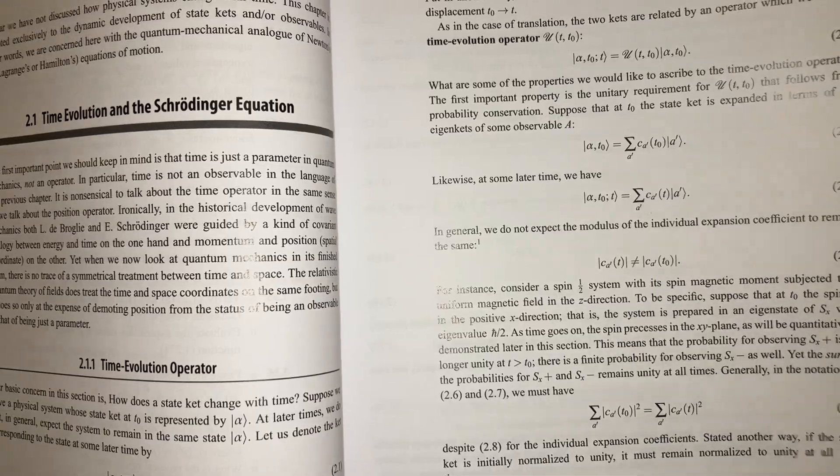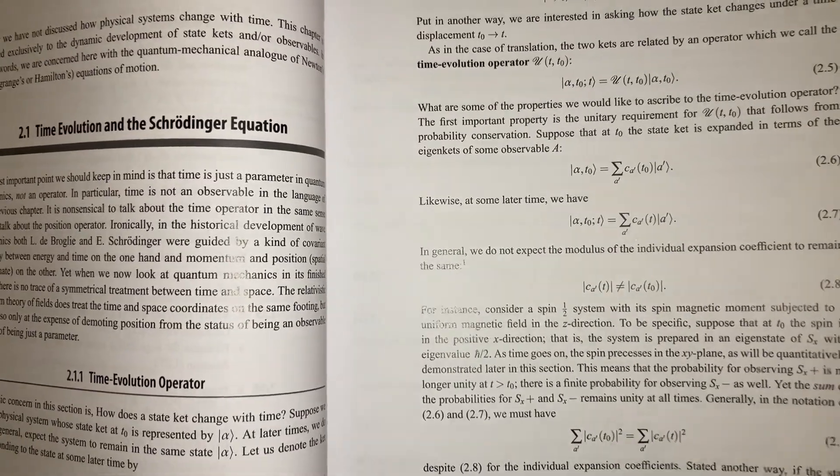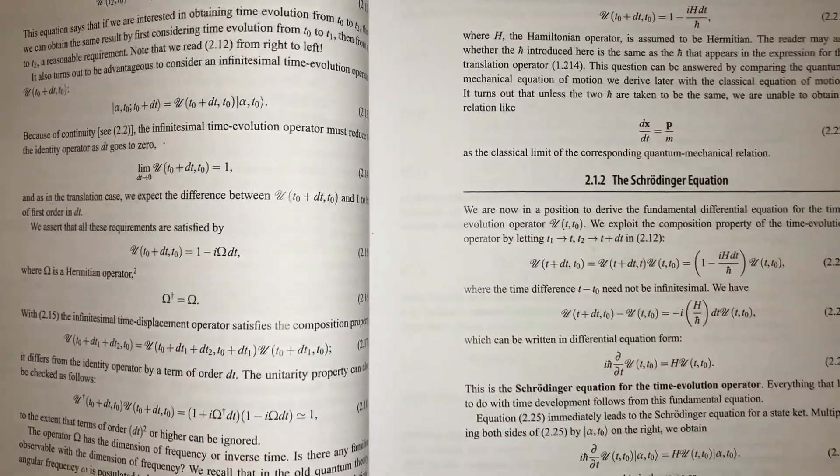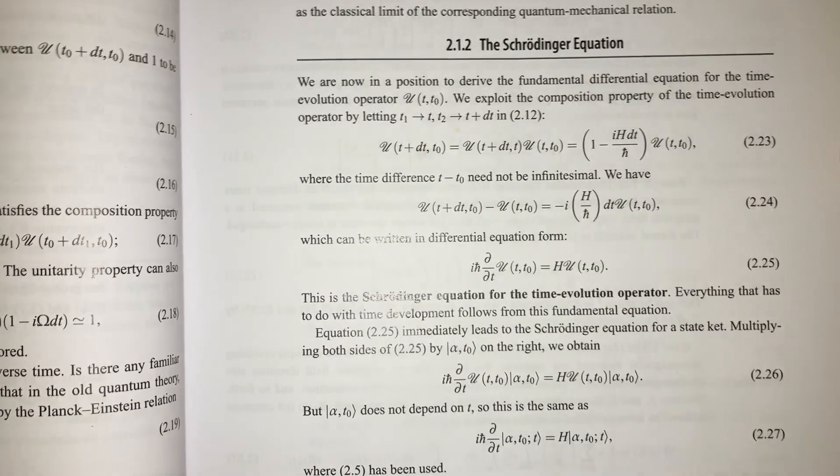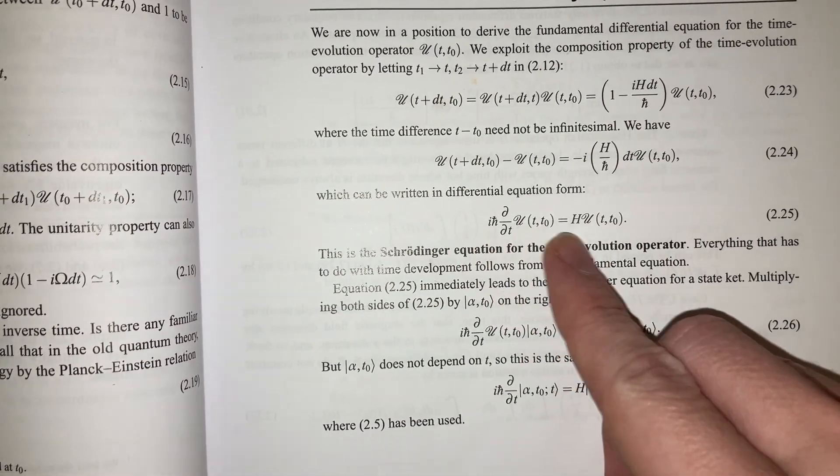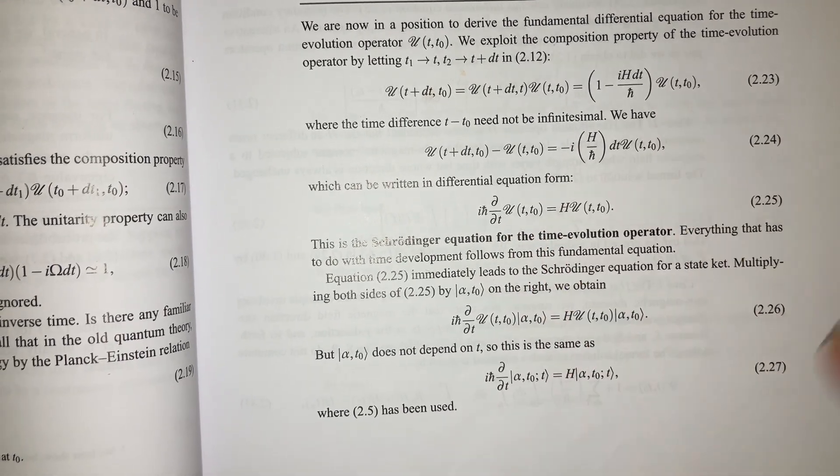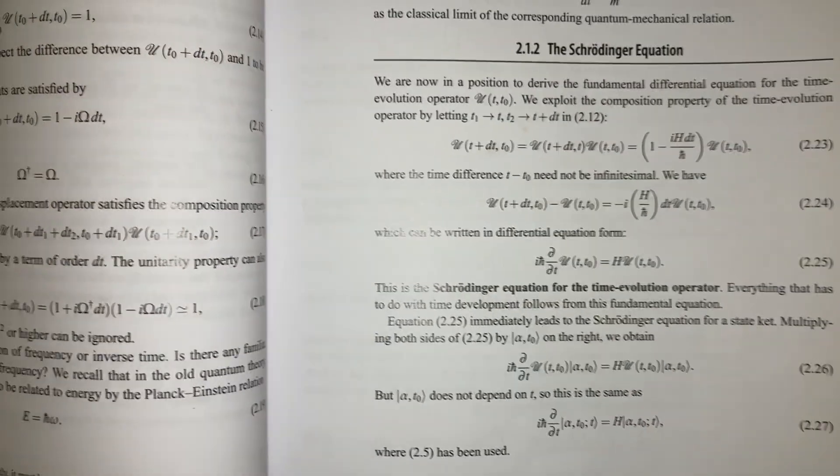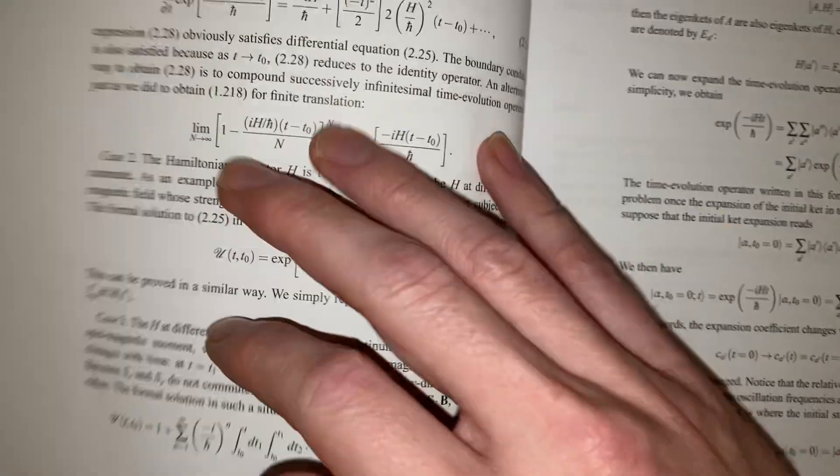Time evolution of the Schrödinger equation. Okay. There it is. And, yeah, so this is the equation. That's pretty cool. They have this very curly notation. Interesting.